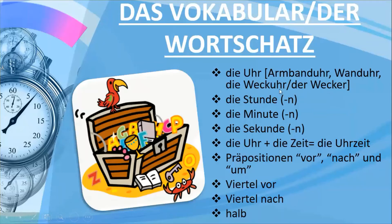The hour is 'die Stunde', plural 'die Stunden'. The minute is 'die Minute', plural 'die Minuten' — written just like the English word 'minute' but pronounced differently. The second is 'die Sekunde', plural 'die Sekunden'.